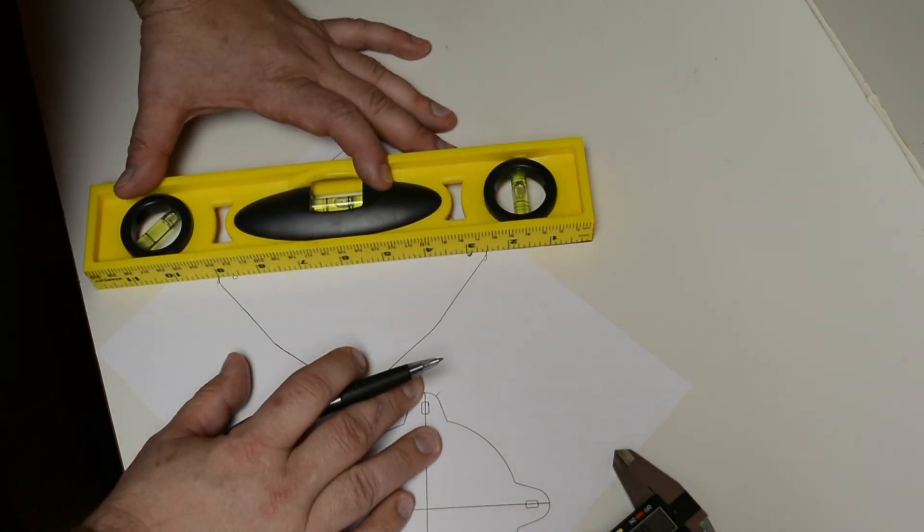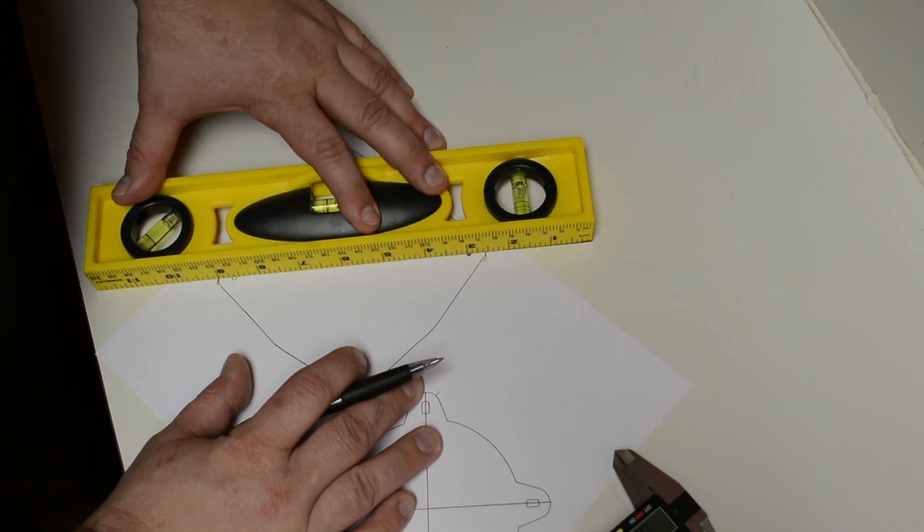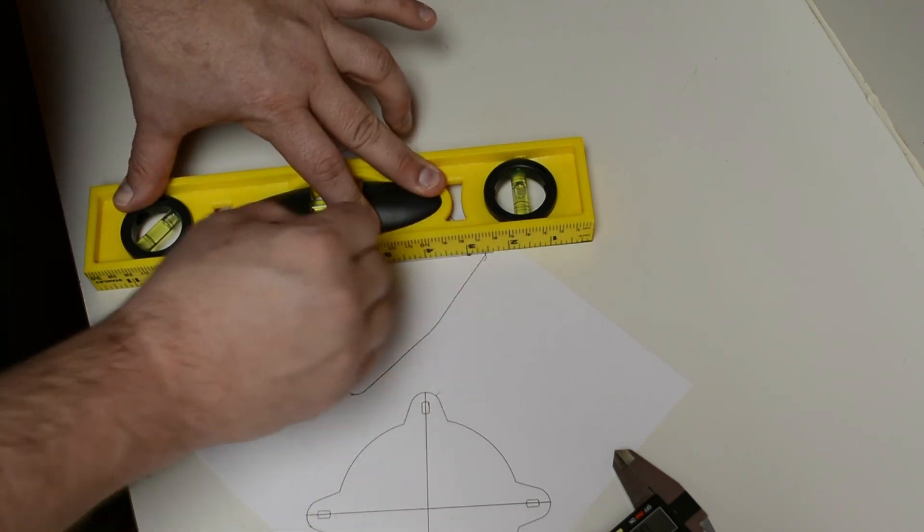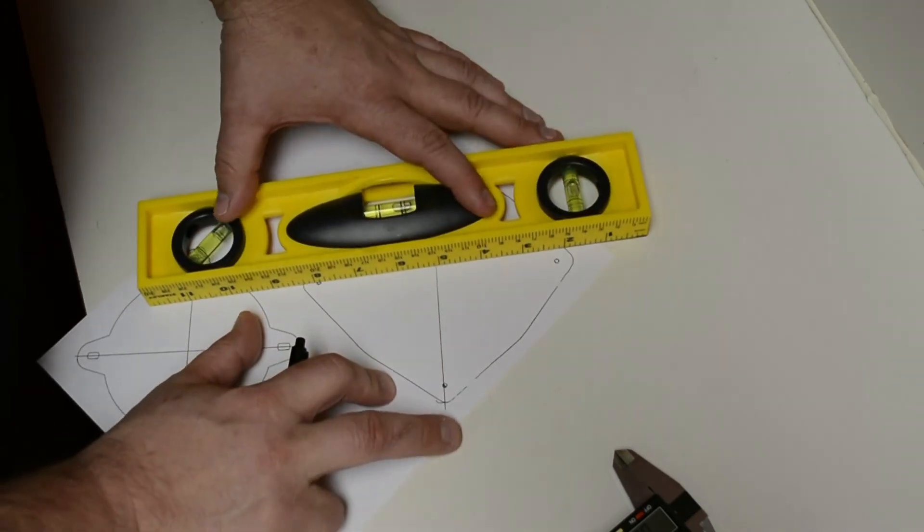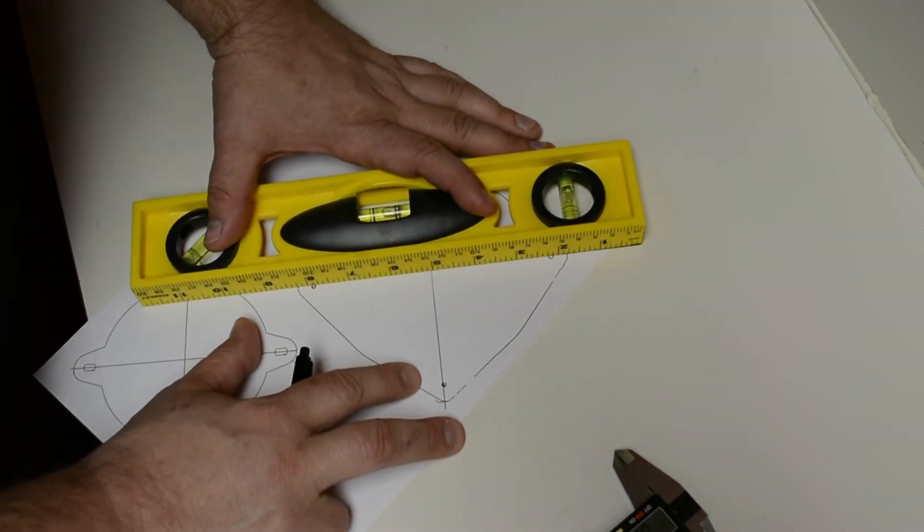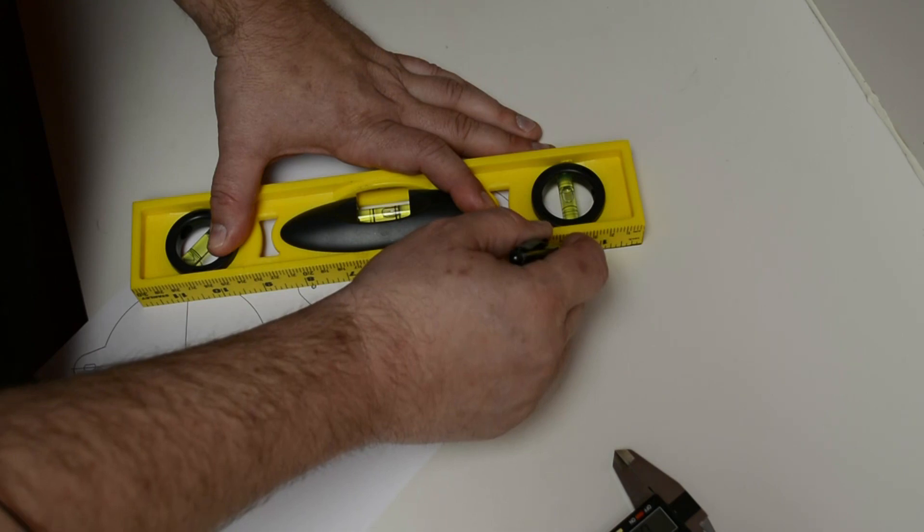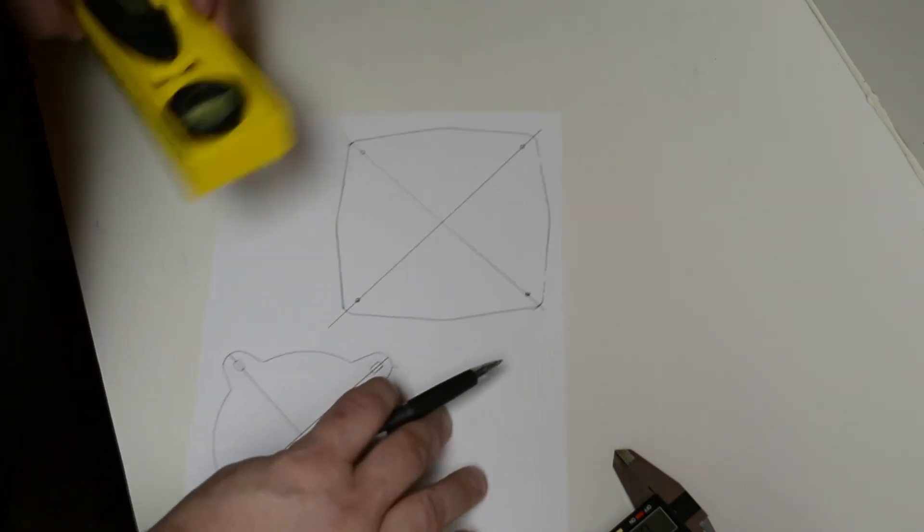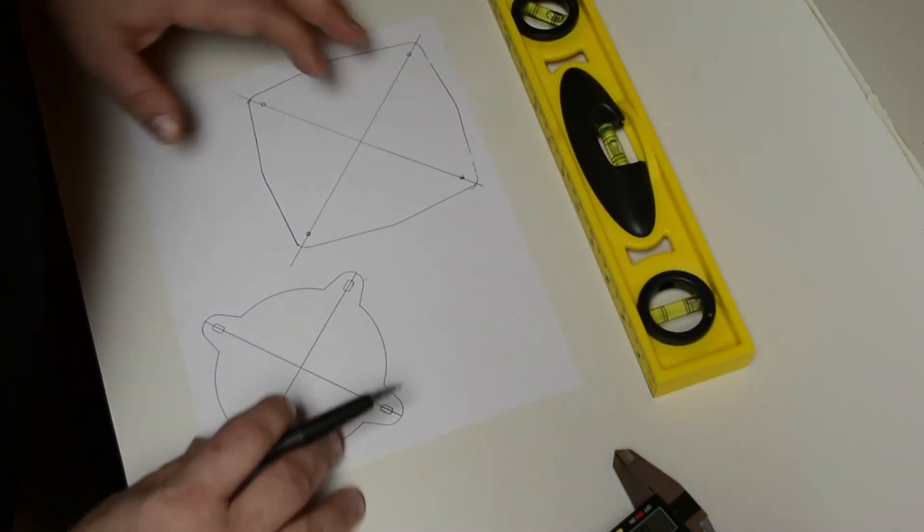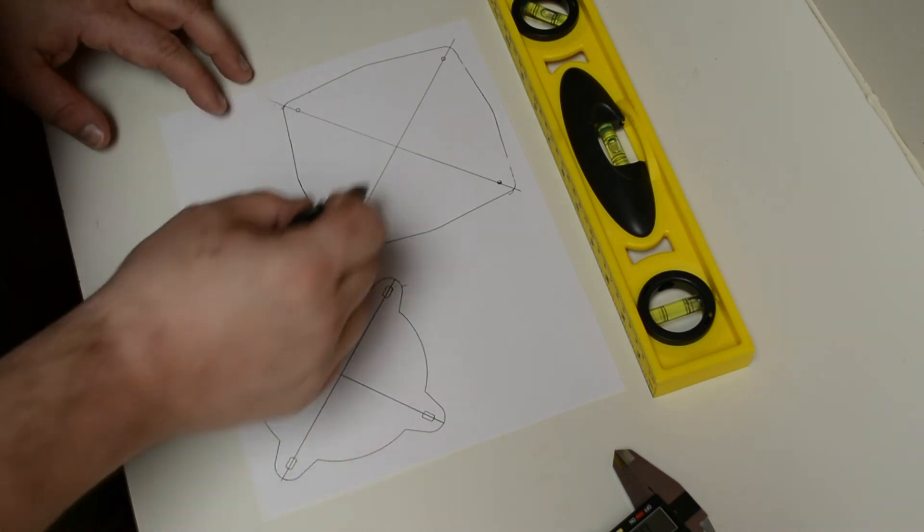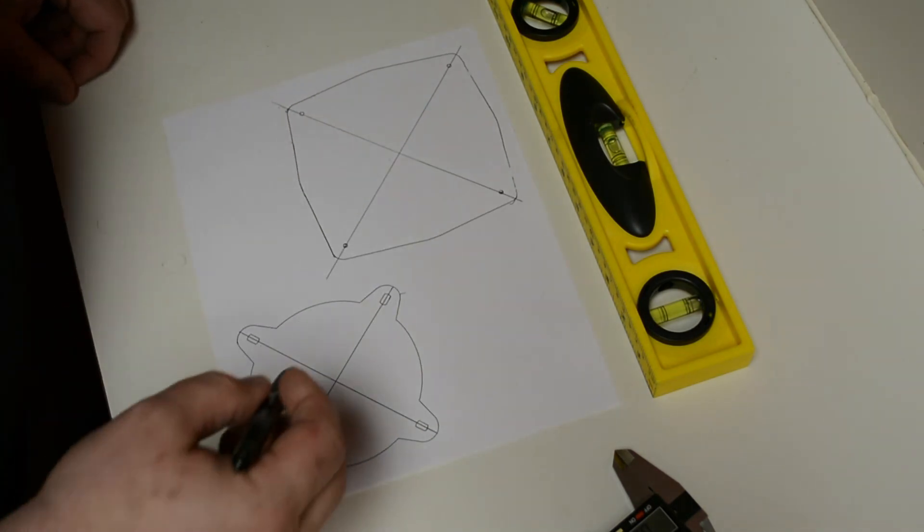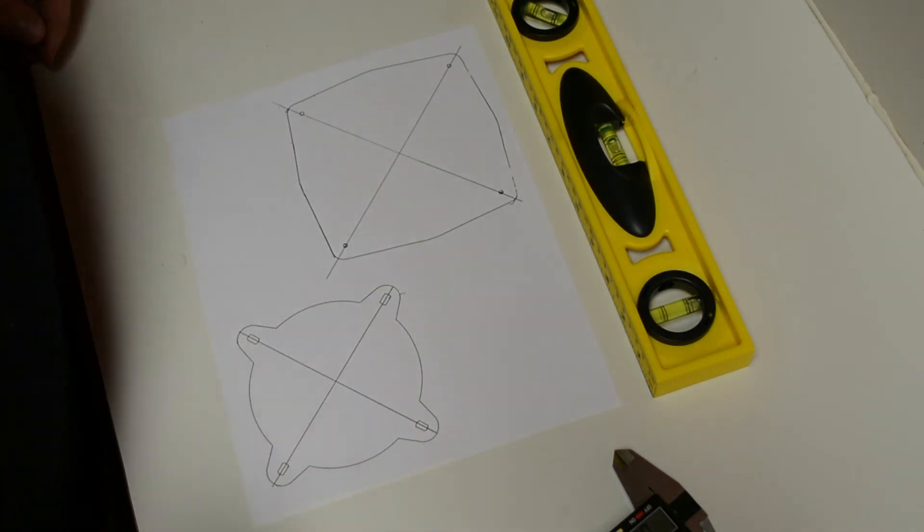We're going to do the same thing on the bigger speaker opening, using the center holes for both. And we're going to go the other way. And there. So now we have both speakers with center points and we're all set now to do the next step.